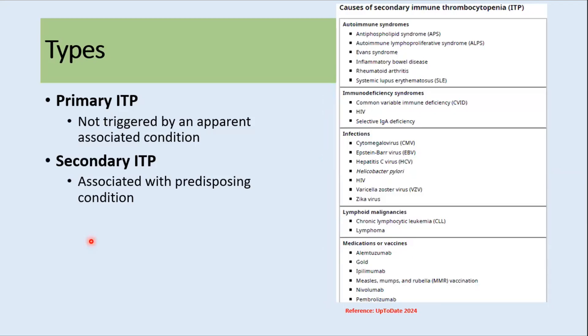ITP can also be classified as primary and secondary. If ITP is not triggered by any apparent associated condition, we call it primary ITP, whereas if it is associated with other predisposing conditions, we call it secondary ITP. Causes of secondary ITP include autoimmune syndromes like antiphospholipid syndrome, rheumatoid arthritis, SLE, infections like HIV or hepatitis C virus, lymphoma, or medications like gold or monoclonal antibodies.